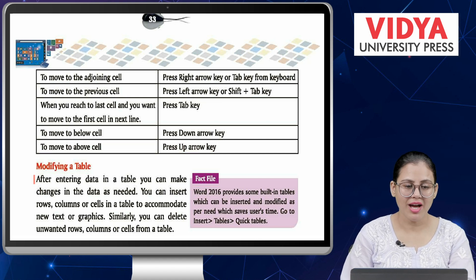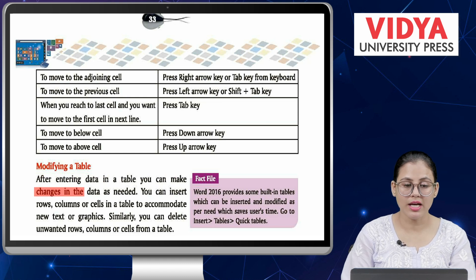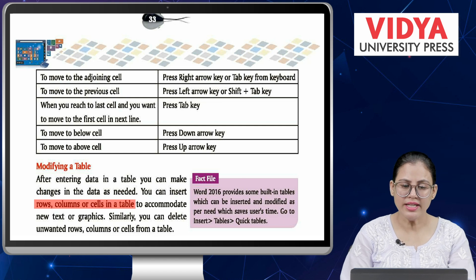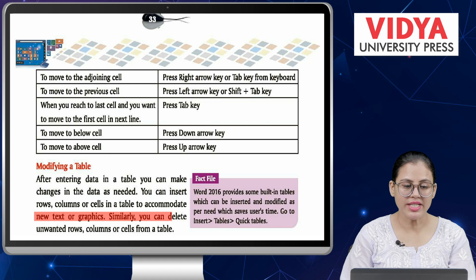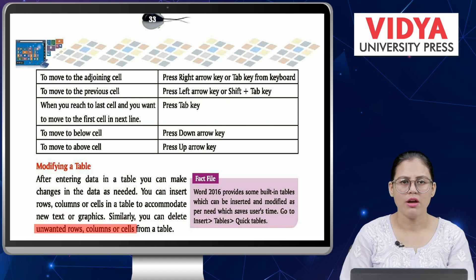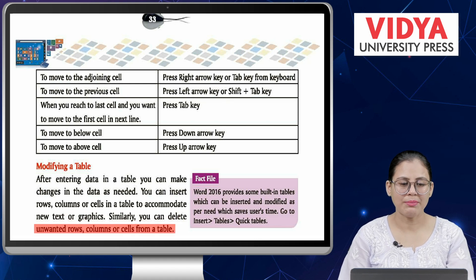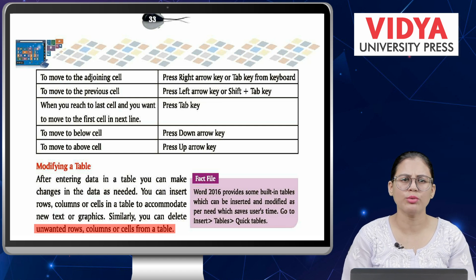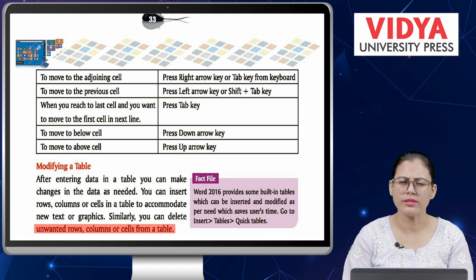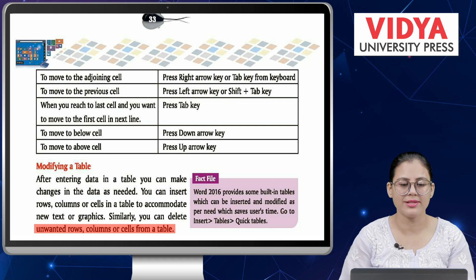Modifying a table. After entering data in a table, you can make changes as needed. You can insert rows, columns, or cells in a table to accommodate new text or graphics. Similarly, you can delete unwanted rows, columns, or cells from a table. You can insert rows, columns, or cells, or delete any unwanted row, column, or cell.